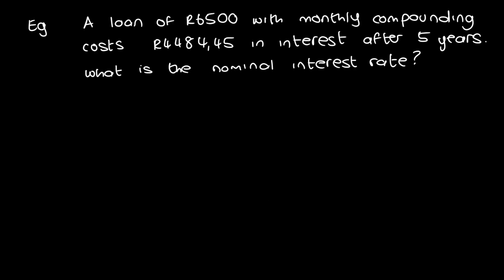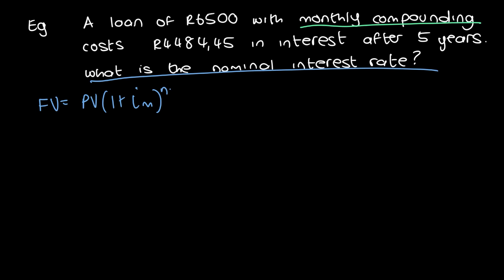This example says: a loan of six thousand five hundred rand with monthly compounding costs four thousand four hundred and eighty-four rand and forty-five cents in interest after five years. What is the nominal interest rate? First, since it mentions monthly compounding, we use the compound interest formula: FV = PV(1 + i/m)^n. It asks for the nominal interest rate, so we need the effective interest rate first using i/m = (FV/PV)^(1/n) − 1.